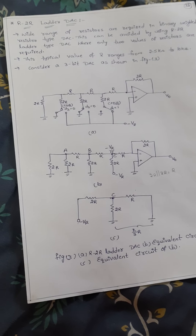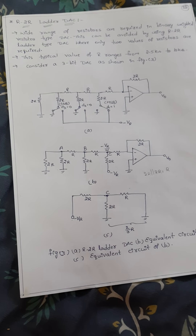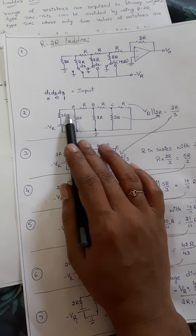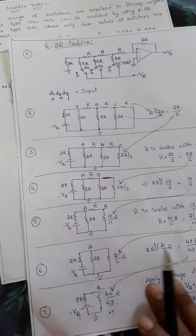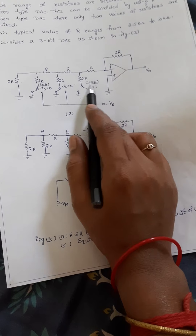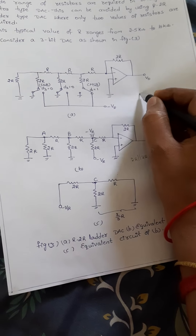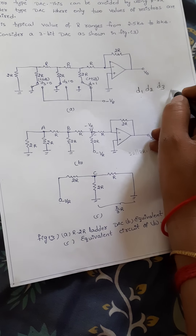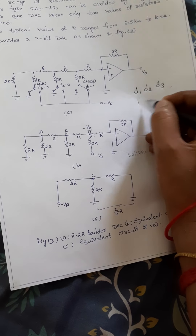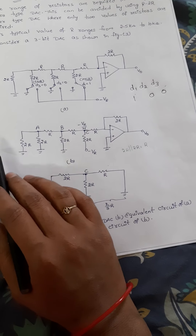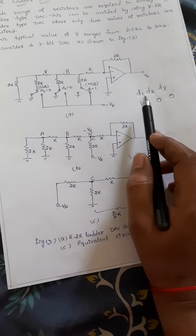Hi students. Last video we seen the R2R ladder DAC example with input 001. I will show another example. Here the example is D1, D2, D3 from MSB bit to LSB bit. So D1 is 100. Last we seen the 001 input, now this is 100.